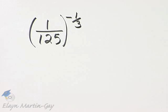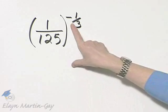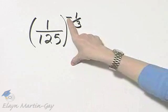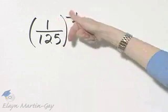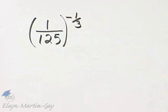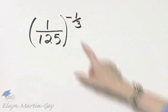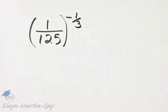Let's simplify the fraction 1 over 125 raised to the negative 1 third power. Now this is up to you, but recognizing you have a negative exponent here, you can simply take the reciprocal of 1 over 125 and it then becomes the positive 1 third power.